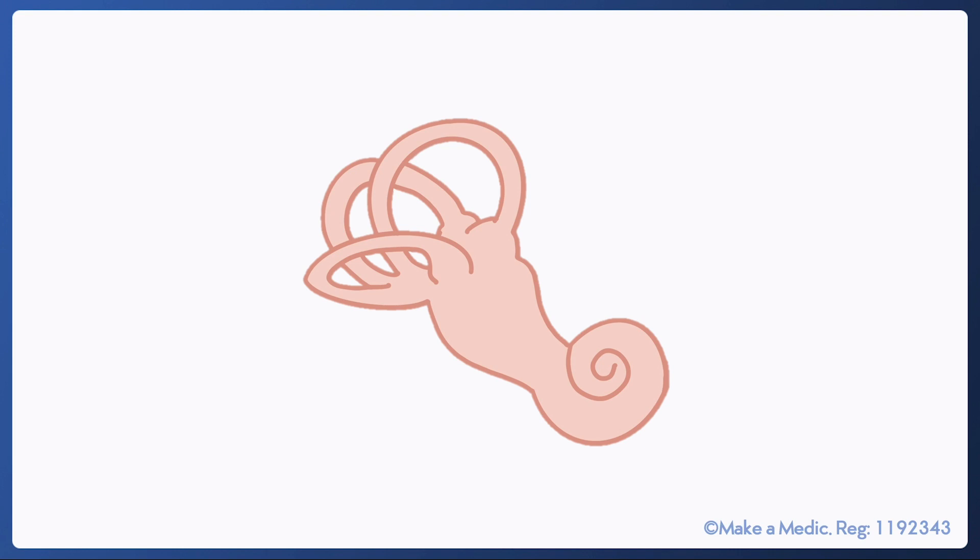So this is the vestibular apparatus. It's a snail-shaped structure that's located within the inner ear and enables us to sense the movement of our head in space. We don't need to go into the structure and function of the vestibular apparatus in too much detail in this video but it's worth knowing that there are three main parts.